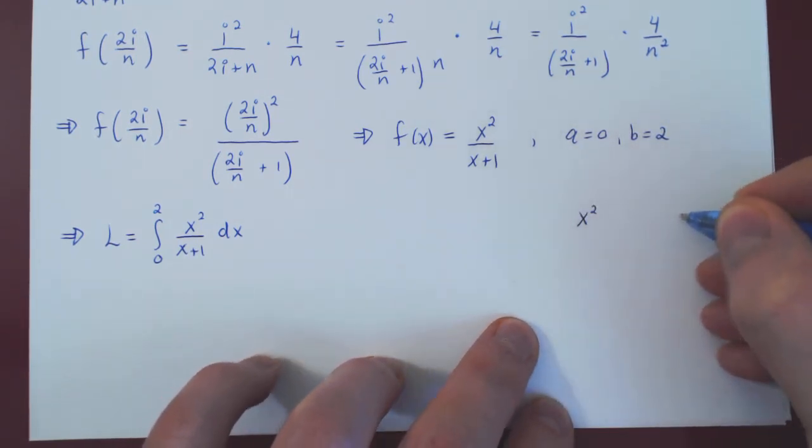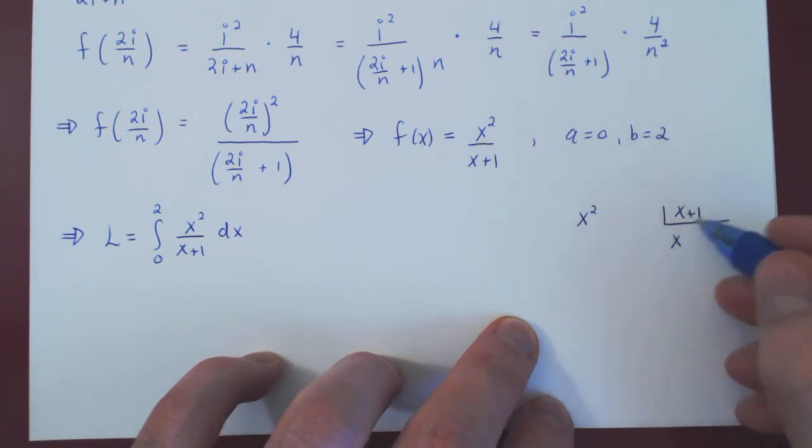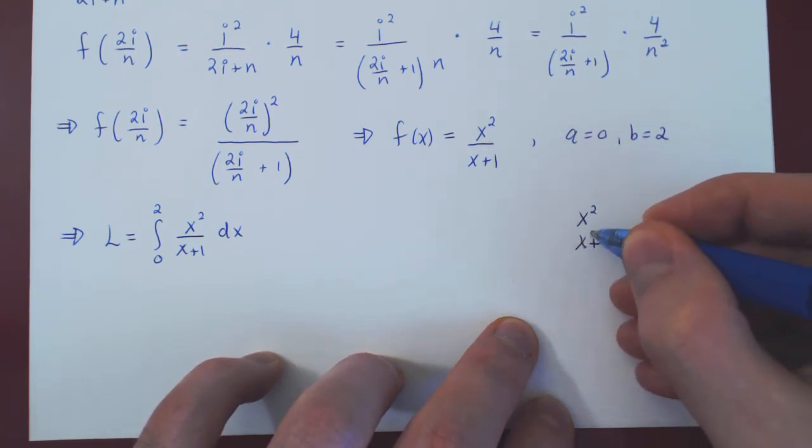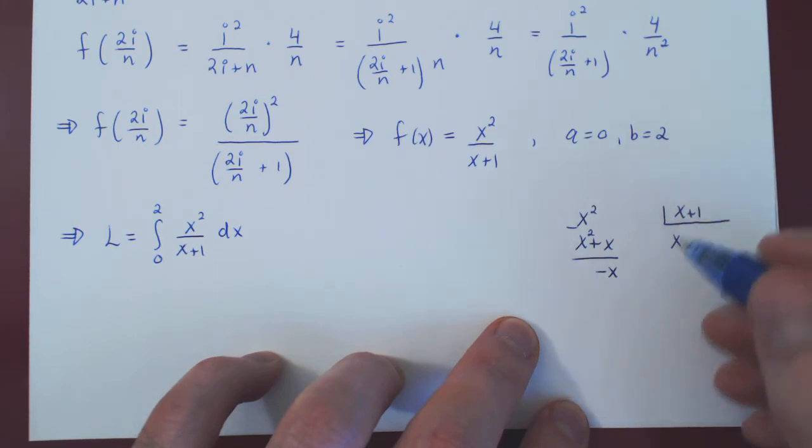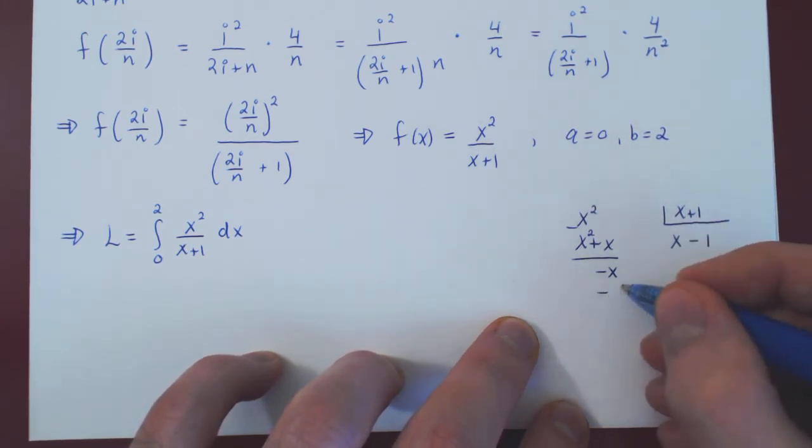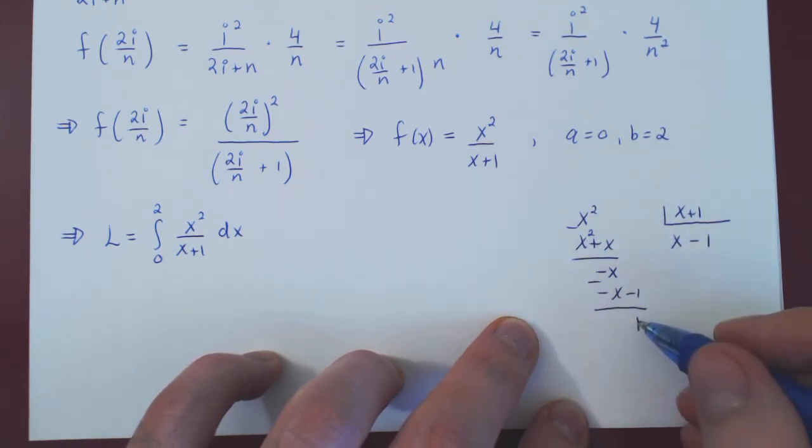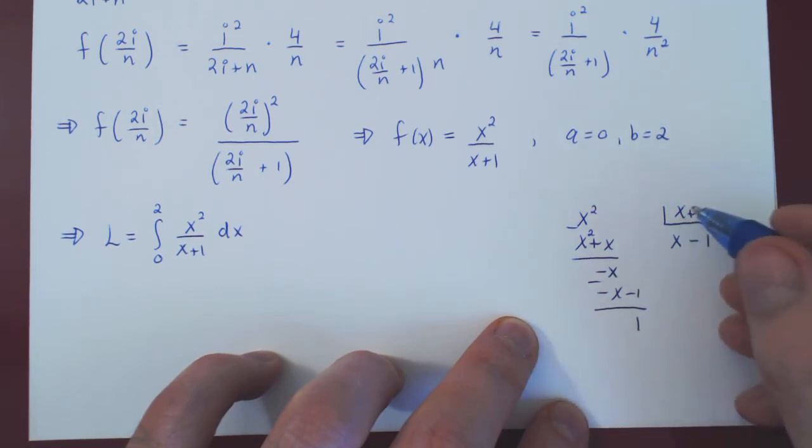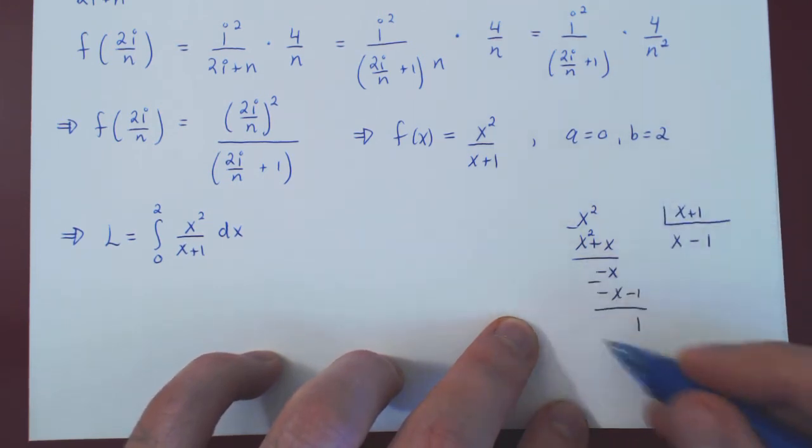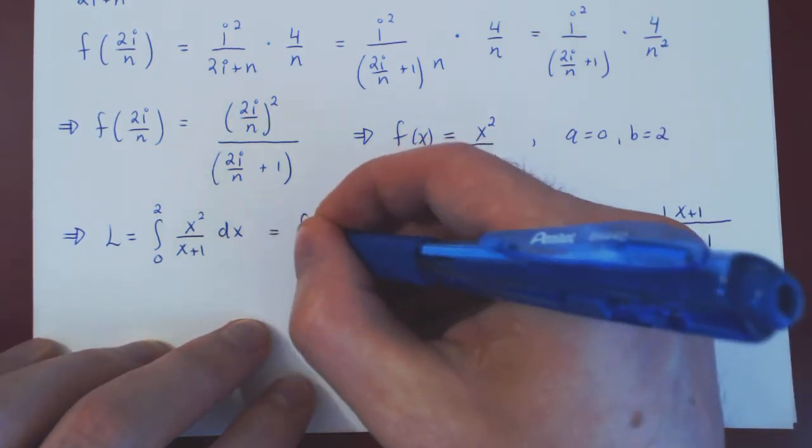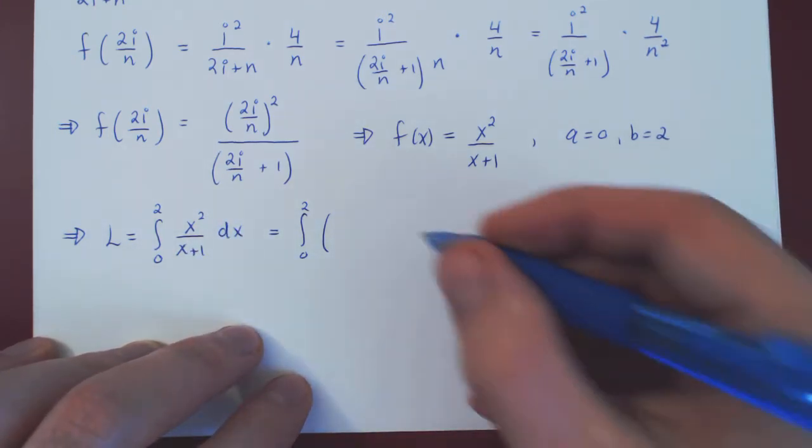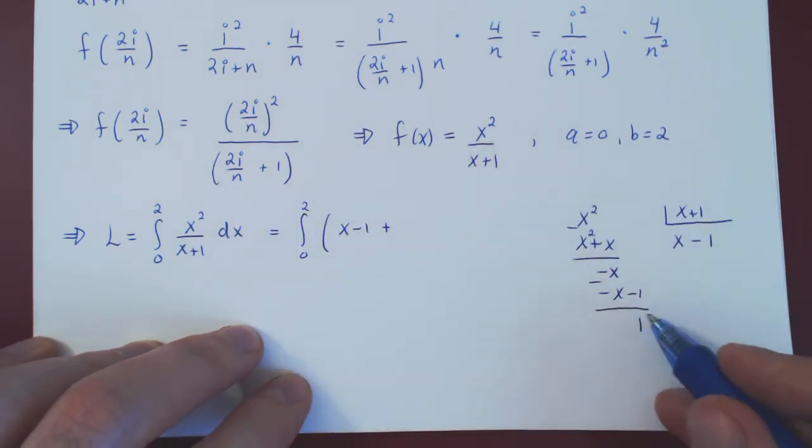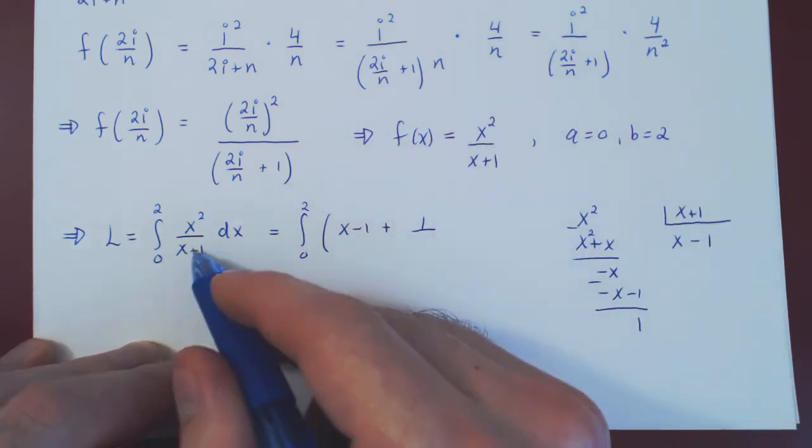So x squared, dividing by x plus 1. What times x is x squared? Of course it is x. Multiply all of x plus 1 by x, gives you x squared plus x. We subtract. And we're left with a negative x. The degree is 1. The degree here is 1. We have to repeat. So minus 1 gives us minus x minus 1. We subtract. We're left with plus 1. This is a constant. The degree is 0. The degree here is 1. 0 is strictly less than 1. And we are done long division. Which implies that the function x squared over x plus 1 equals x minus 1 plus the remainder, 1, over the divisor x plus 1.